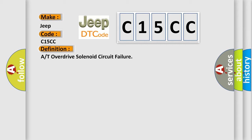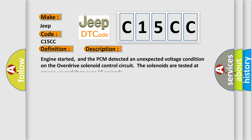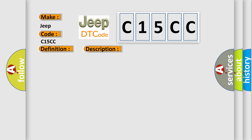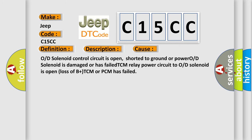Here is a short description of this DTC code. Engine started, and the PCM detected an unexpected voltage condition on the overdrive solenoid control circuit. The solenoids are tested at power up and then every 10 seconds. This diagnostic error occurs most often in these cases: O/D solenoid control circuit is open, shorted to ground or power; O/D solenoid is damaged or has failed; TCM relay power circuit to O/D solenoid is open; loss of B+; or TCM/PCM has failed.